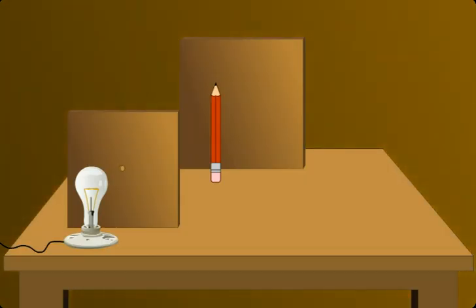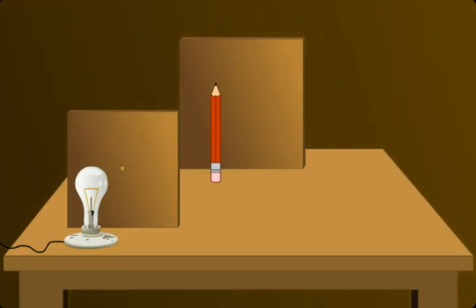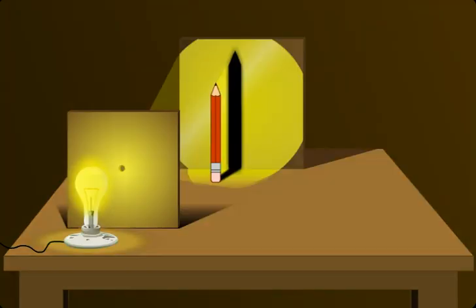See if you compare the bulb with a pencil, bulb is pretty big. I mean you can't call it a point source. So we allow the light to pass through the hole so that it acts as a point source. Fine? Now what happens?